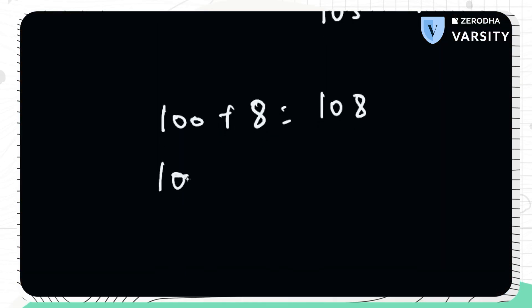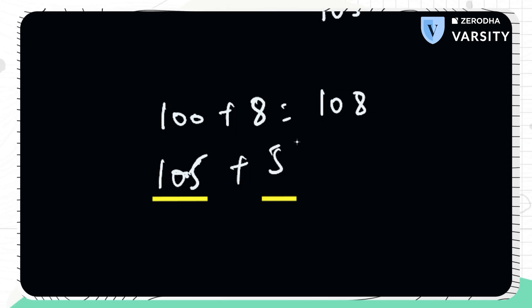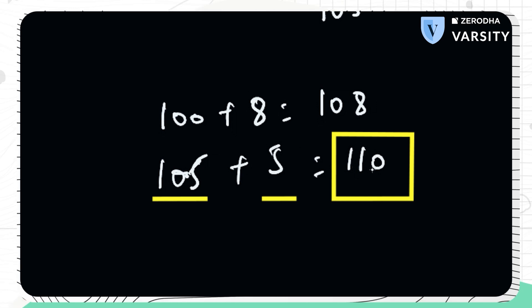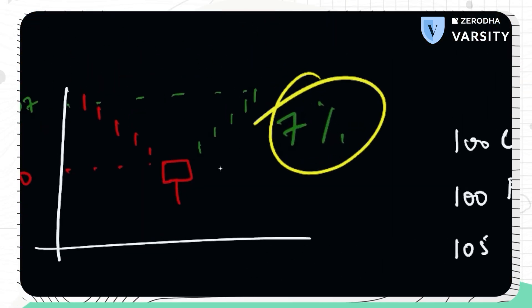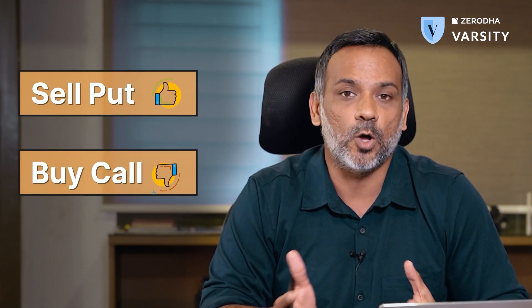If we choose to buy the 105 call option, the breakeven would be 105 plus the 5 rupee premium, so we break even at 110. Obviously, it doesn't make sense to buy any of these options because the up move we are expecting is only 7%. Why would you buy an option whose breakeven is much higher than the up move you are expecting? This is a situation where you would rather prefer to sell a put option rather than buying a call option.